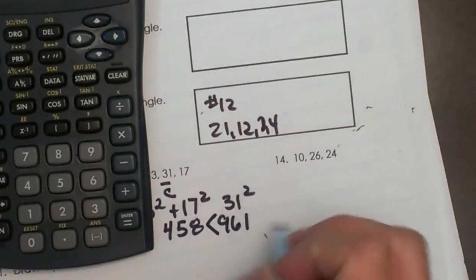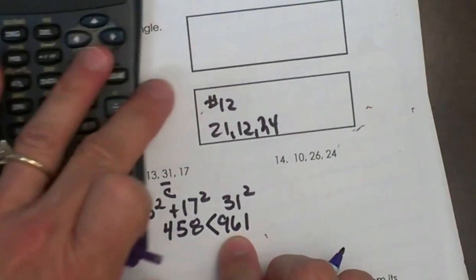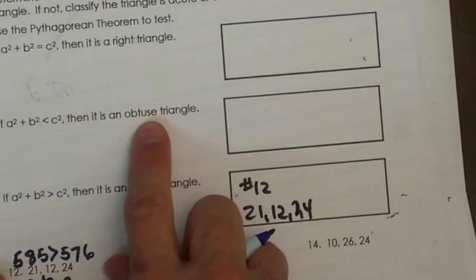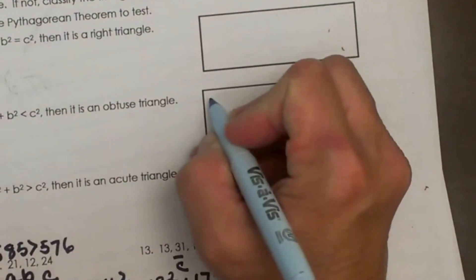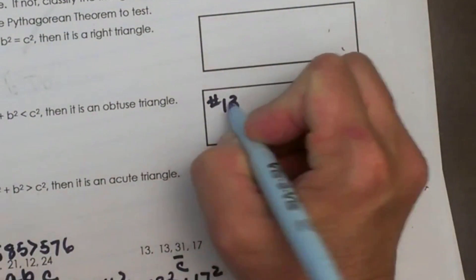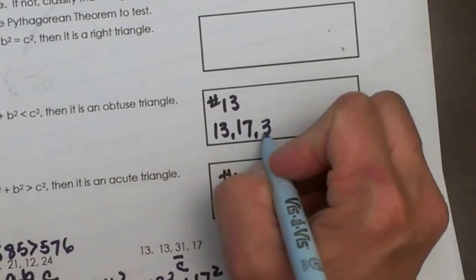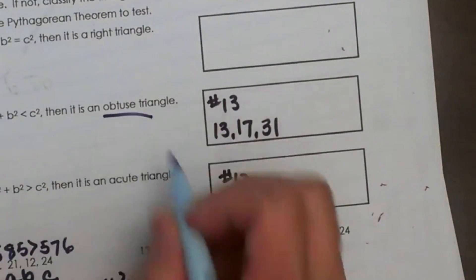So it is very obvious that C this time is greater than A squared plus B squared. Well, when C is greater than A squared plus B squared, we have an obtuse triangle. So for number 13, we know that the sides that are 13, 17, and 31 are an obtuse triangle.